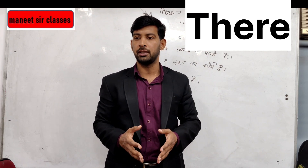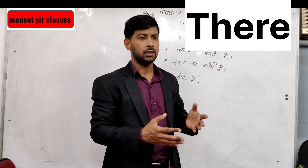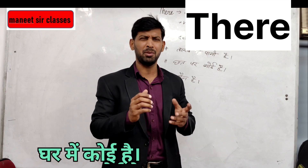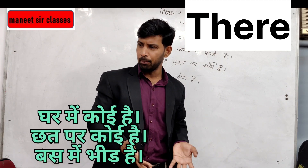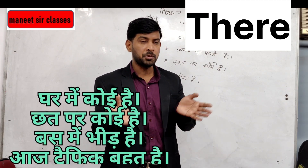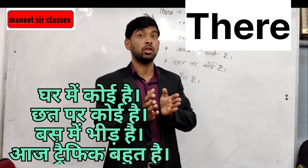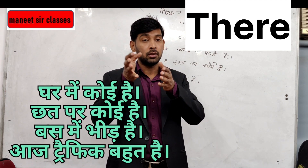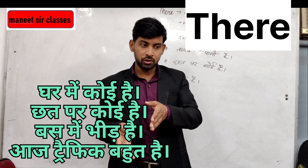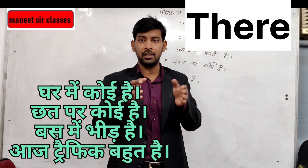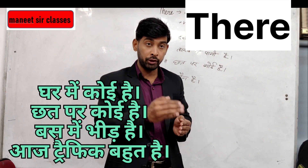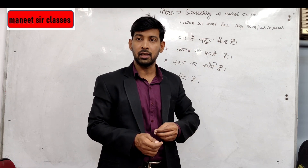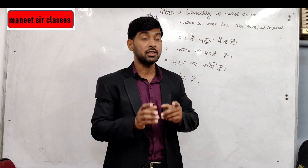Sometimes I have to speak sentences like: 'ghar mein koi hai' (someone is in the house), 'chhat mein koi hai' (someone is on the roof), 'pasr mein bhot bhele hai'. In all these kinds of sentences I am talking about something that exists or doesn't exist - ki kuch chij hai ya nahi hai. Jab hum kisi chij ke hone ya na hone ki baat karenge, tab hum lagate hain 'there'.